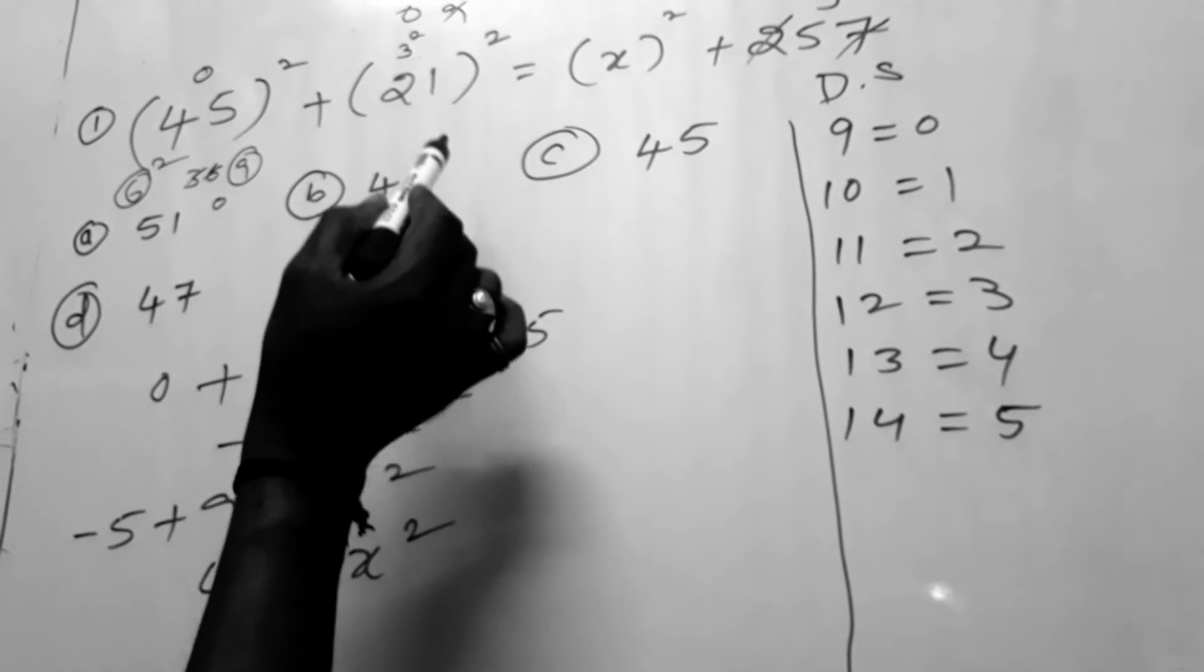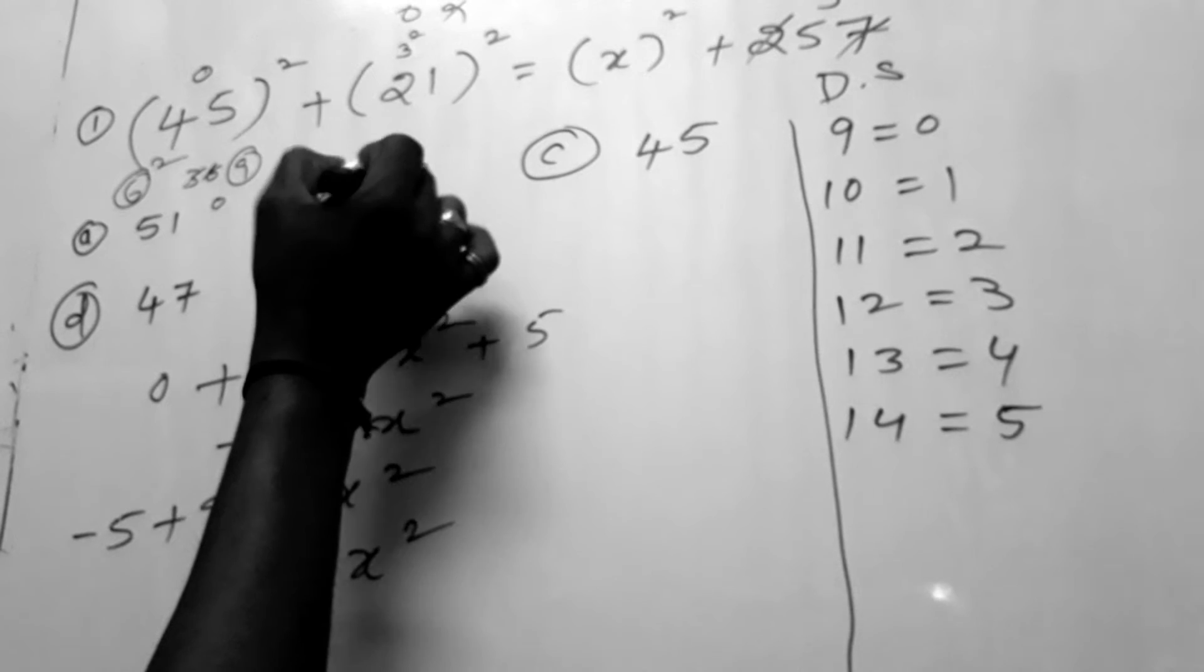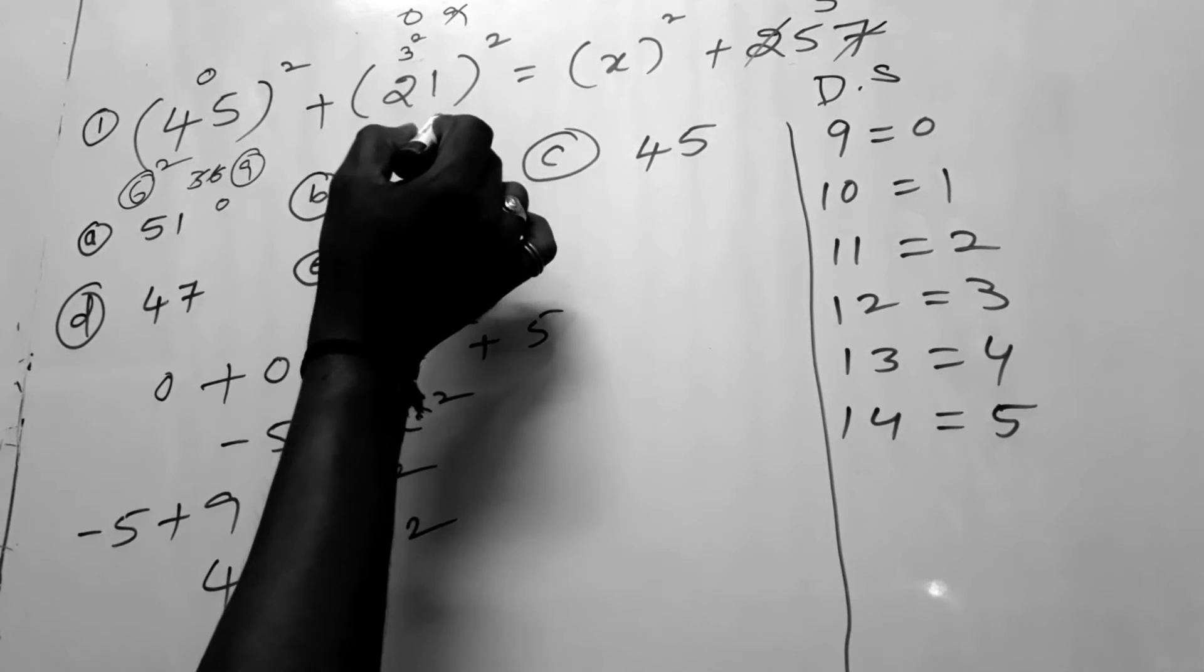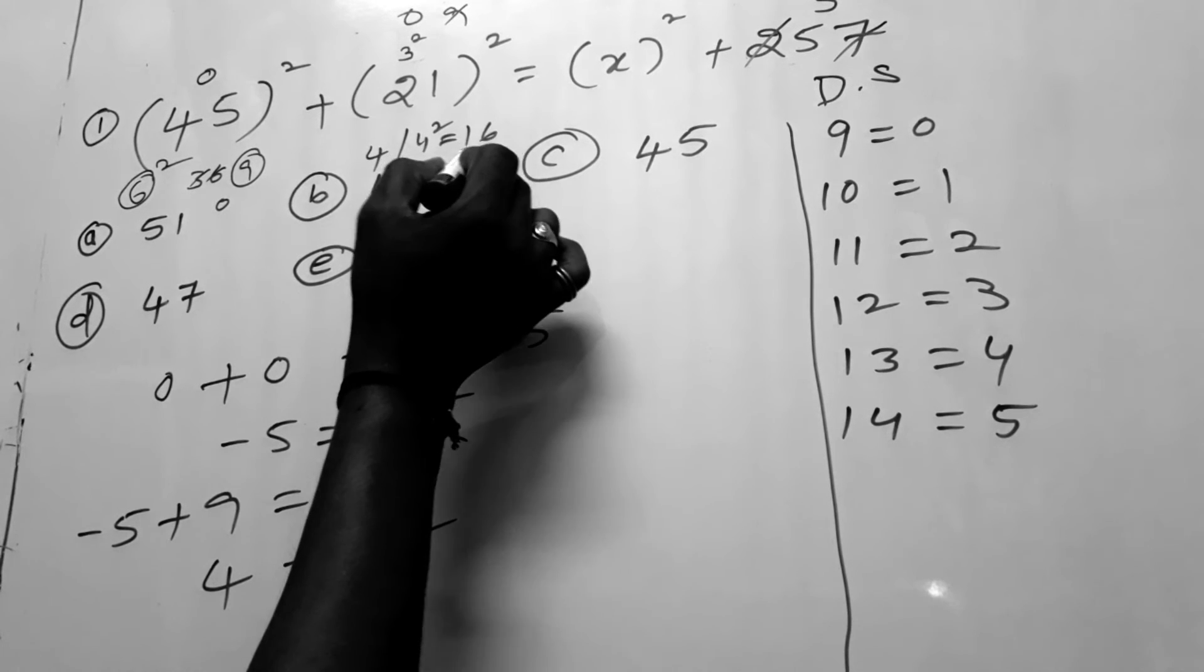Second one is 49. 49 means 4. 4 square is 16. Okay, then digital sum 1 plus 6 is 7.